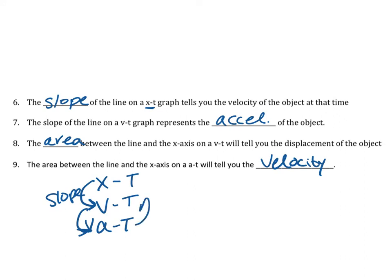Here's a shortcut: if you're going down the list — position to velocity to acceleration — you use slope to find the next thing. If you're going up the list, you use area. So if you have a position graph and want to find velocity, use slope. If you have a velocity graph and want to find acceleration, use slope. If you have a velocity graph and want to find how far it went, use area. If you have an acceleration graph and want to find velocity, use area. I'll bring this back up again later in the unit.